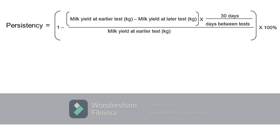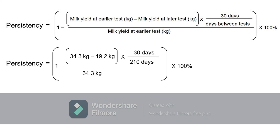The average persistency from test day 4 to test day 11, which are 210 days apart, is therefore calculated as: the quantity of 34.3 kg milk yield at the earlier test minus 19.2 kg milk yield at the later test, multiplied by the quotient of 30 days divided by 210 days between tests, then divided by 34.3 kg milk yield at the earlier test, then subtracted from 1, then finally multiplied by 100%. The calculated average persistency is equal to 93.71%.